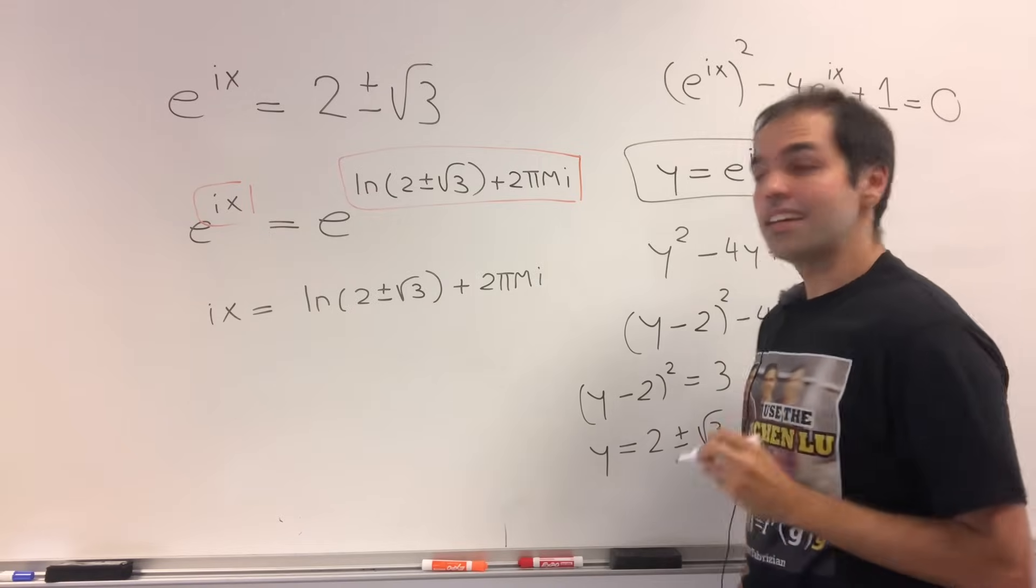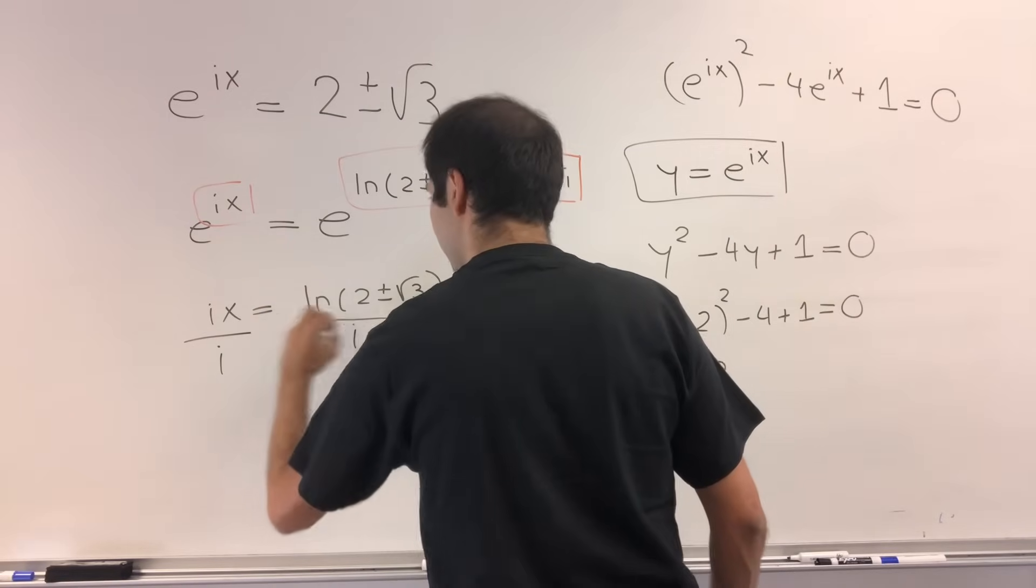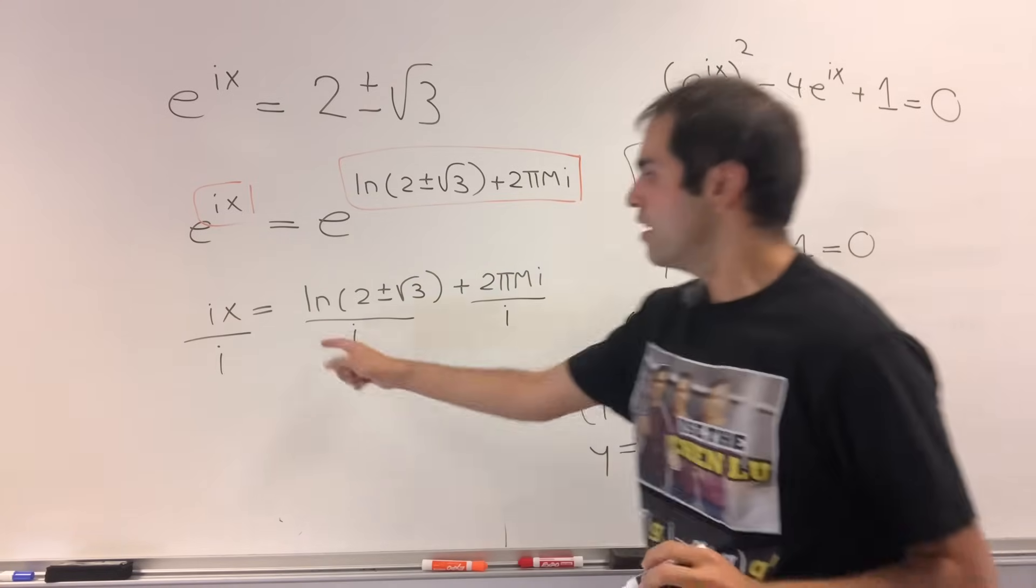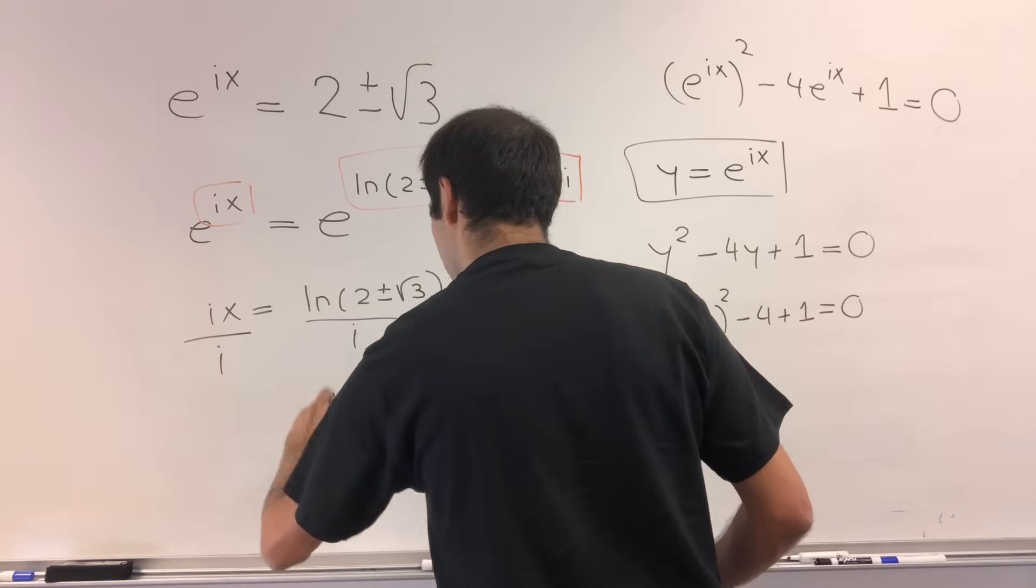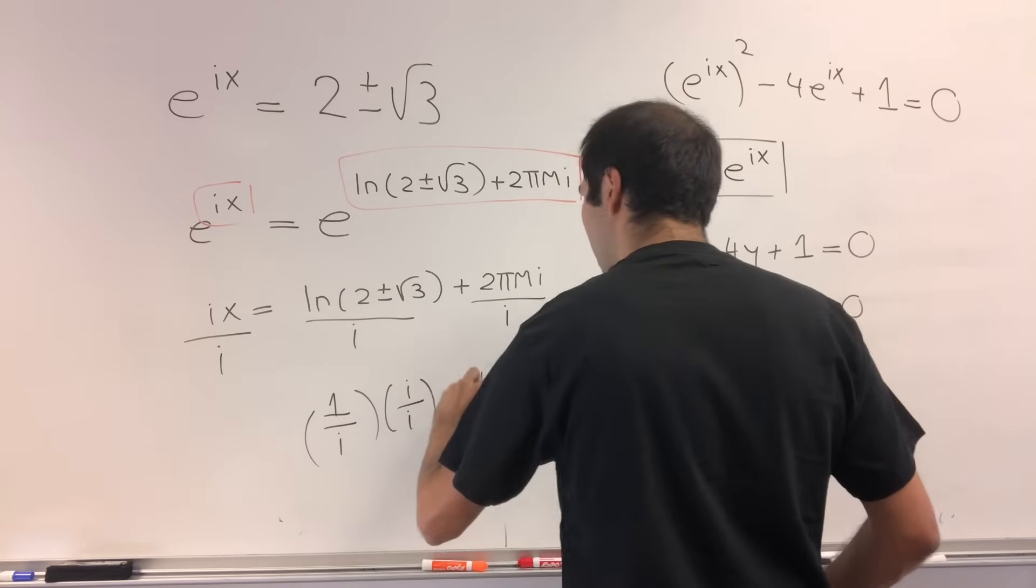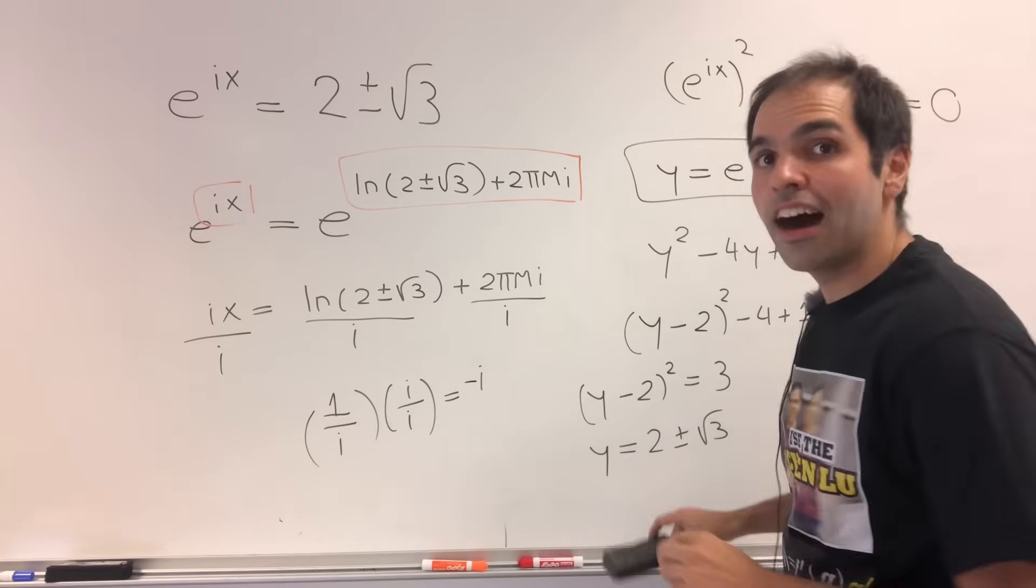And last but not least, simply divide by i to get x equals this over i and this over i. But remember, 1 over i, if you multiply top and bottom by i, then you get i over i squared, which is minus 1. So in the end, minus i.